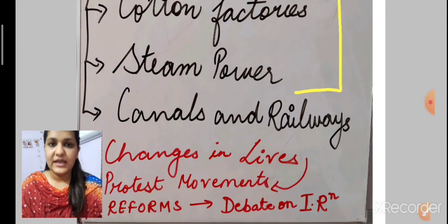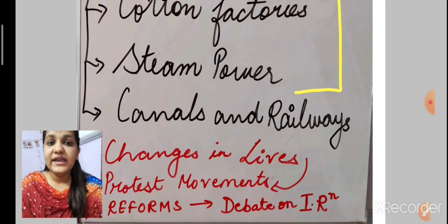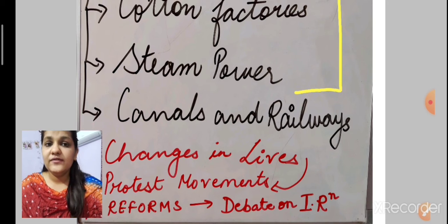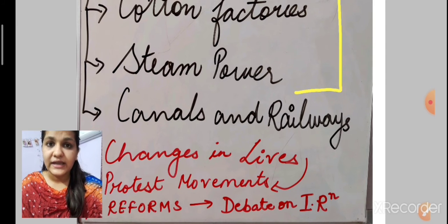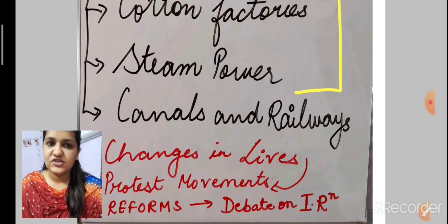We have to read about how the industrial revolution came, what were the things that led to it, and why it happened in Britain only. It actually improved the lives of people, but on the other hand, the hardship of the poor — especially children and women — was very bad because of the growth of industrialization, which led to poor living conditions. We will be studying this in detail in this chapter.